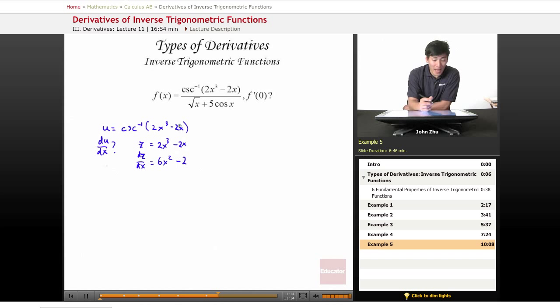So dz dx will become 6x squared minus 2. All right, so going back, we know that du dx is going to equal cosecant inverse of u,